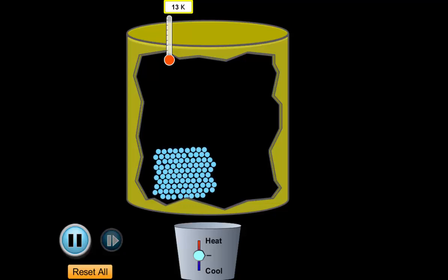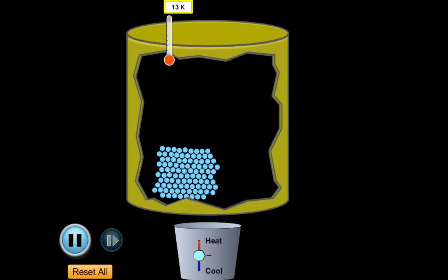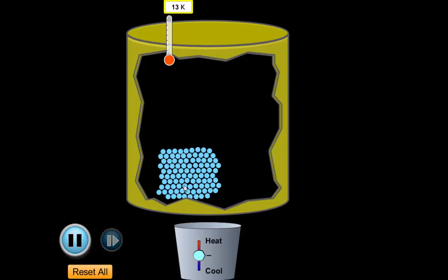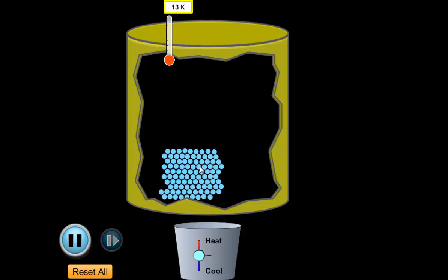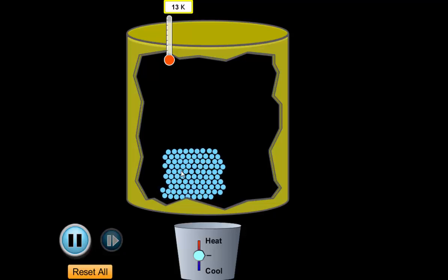Let's take a look at how to change one state of matter into another. Now if we're looking at this, hopefully we can tell that this is a solid. The particles are vibrating in place, but they are still locked in position, so the forces of attraction are holding them together.